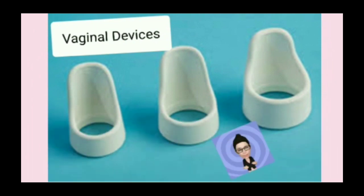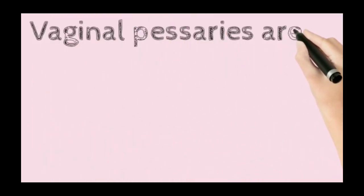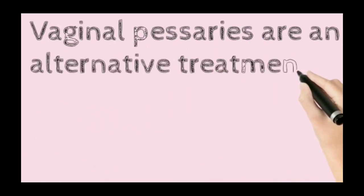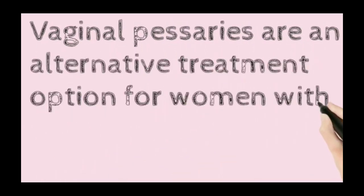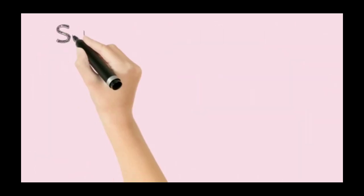What is the place of vaginal pessaries? We have different vaginal pessaries. Is there any role of that? About this written that vaginal pessaries are an alternative treatment option for women with stage 2 to 4 post-hysterectomy wall prolapse. Therefore, 2 to 4, these are effective.